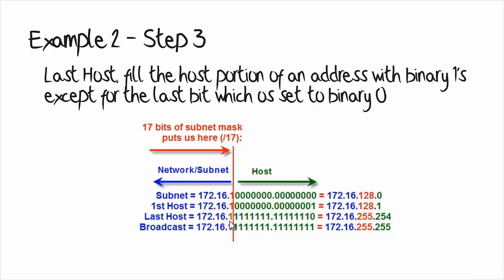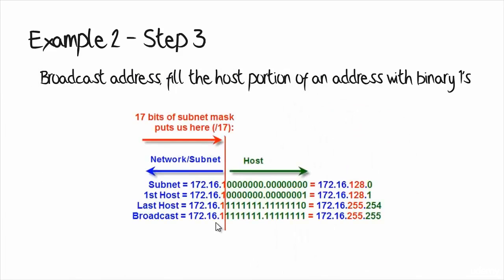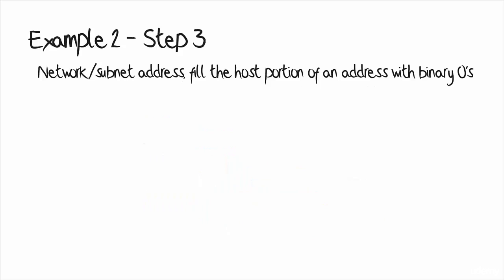Notice the third octet is filled with binary 1s — a single red binary 1 followed by seven green binary 1s, which is eight binary 1s giving a value of 255. The fourth octet is filled with seven binary 1s followed by a binary 0, giving a decimal value of 254. To work out the broadcast address, fill the host portion with binary 1s: eight binary 1s in the third octet giving 255, and eight binary 1s in the fourth octet giving 255. The broadcast address is 172.16.255.255.